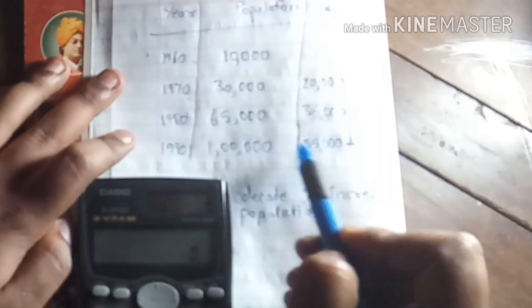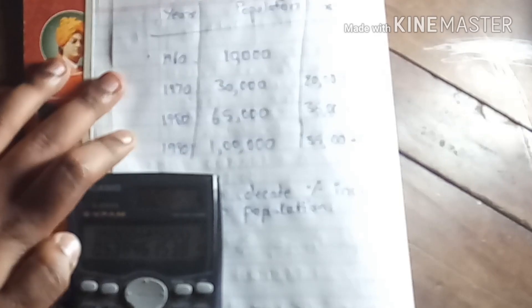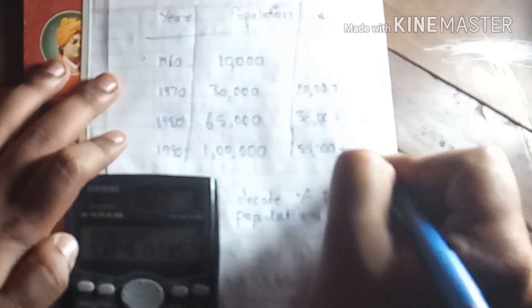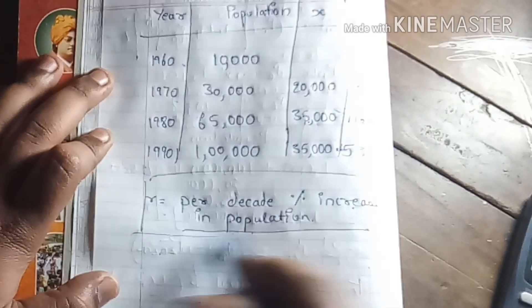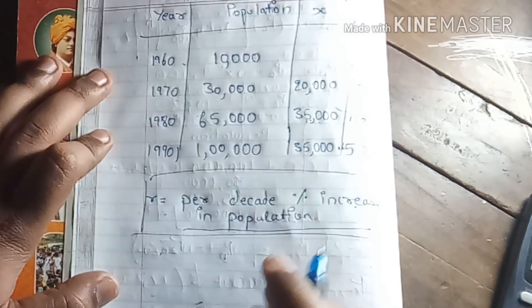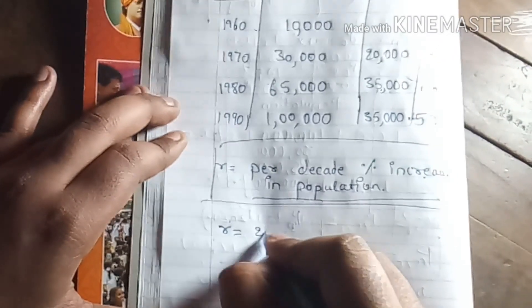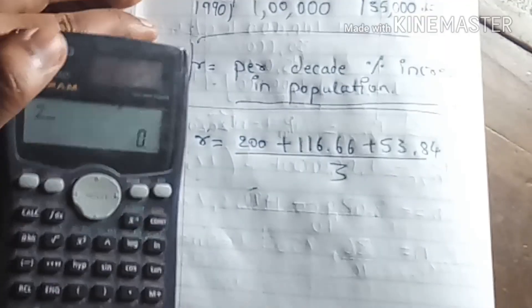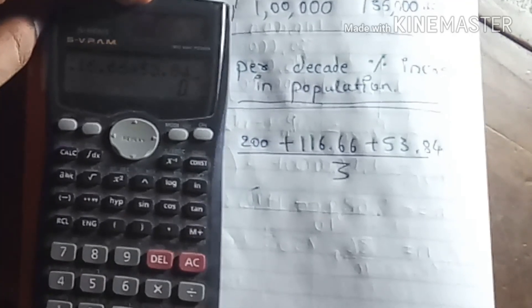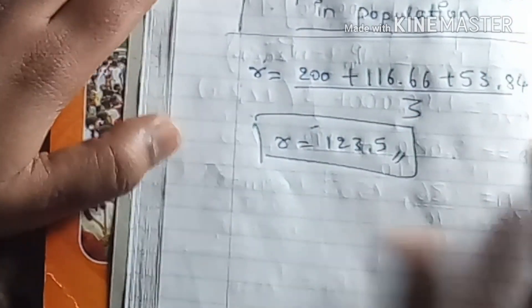From 1980 to 1990: increase is 35,000 and original is 65,000, so R = 35,000 / 65,000 × 100 = 53.84%. To find the mean R, we calculate (200 + 116.66 + 53.84) / 3 = 123.5. Therefore R = 123.5.